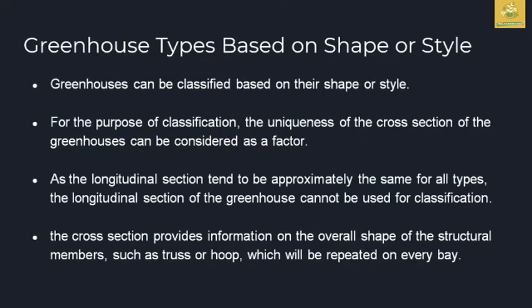First, we are going to see greenhouse types classified based on shape or style. The uniqueness of the cross-section of the greenhouse is considered the major factor in this classification, as the longitudinal section tends to be approximately the same for all types. The cross-section provides information on the overall shape of structural members such as trusses and hoops, repeated at each bay.